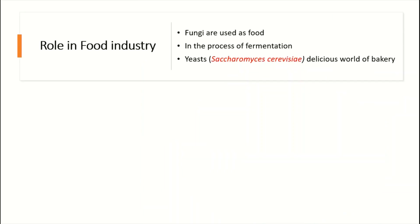In the food industry, mushrooms are used as food, and fungi are used in the process of fermentation — mainly yeasts, which have been involved in fermentation since the mid-19th century. For example, Saccharomyces cerevisiae has been largely used in bakery, developing the world of delicious baked goods.